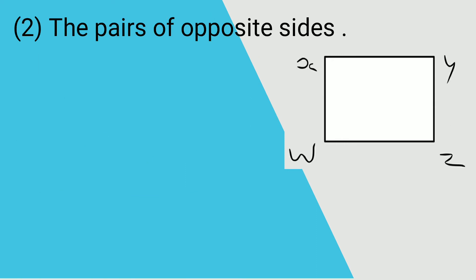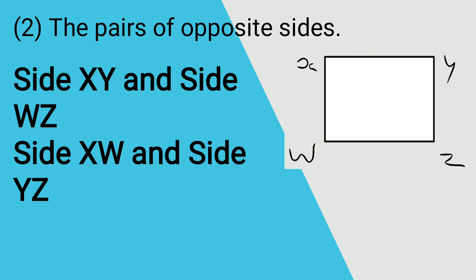The second question asks for the pairs of opposite sides. Opposite sides do not share a common vertex. The pairs are: side XW and side YZ, and side XY and side WZ. These are the two pairs of opposite sides.